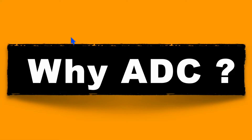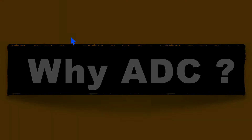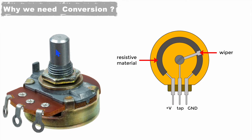Let's understand first why we need this analog to digital converter. I'll explain this with a very basic example. You must know the potentiometer, whose resistance value changes by rotating this knob. When we rotate it, the position of this wiper changes and hence it gives a different resistance value. So the voltage across it will change whenever we rotate the knob of this potentiometer.